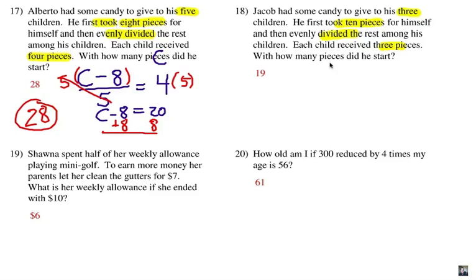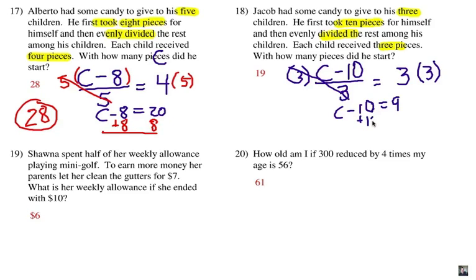Alright, do you have the equation correct? We're going to have C for pieces of candy. He took ten pieces for himself, evenly divided the rest among his children. How many children were there? Three, that's right. And we are going to say that that will give us three pieces. Alright, we are going to multiply here by that three that's being divided on the left side there. And that will give us C minus ten equals nine. And of course, when we add ten to each side, that will give us our answer there.